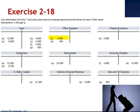Letter C has a debit to office supplies for $2,000 and a credit to cash. The company paid $2,000 in cash for office supplies.